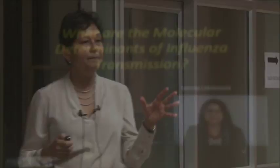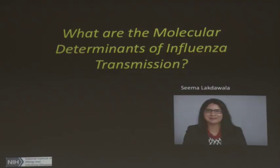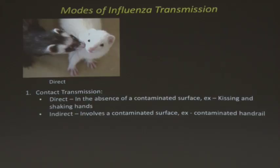What makes a pandemic influenza virus epidemiologically successful? With H5N1 and H7N9, we know certain avian influenza viruses can infect people with documented infections, but they're not spreading from person to person. We were interested in understanding the molecular determinants of influenza transmission. This work was done by Seema Lakdawala, who was a postdoc in my lab when I was at the NIH.